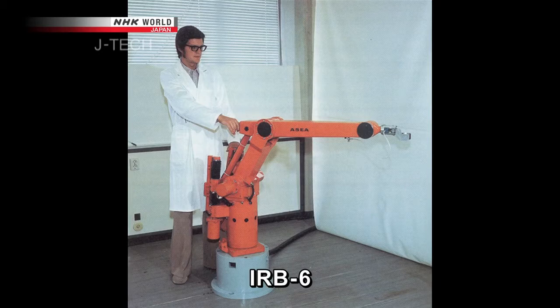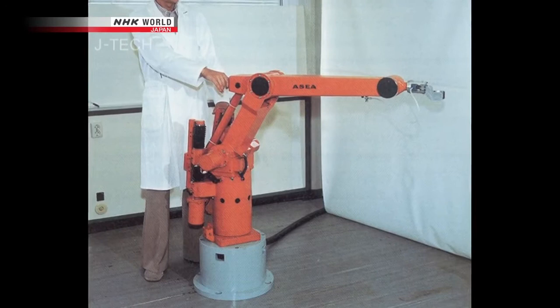Yasukawa engineers studied the robot's specs. The IRB-6 had a five-axis arm with five servo motors installed in its base. Though the motors were weak, the arm moved smoothly and quickly. Its unique structural design surprised Yasukawa engineers.